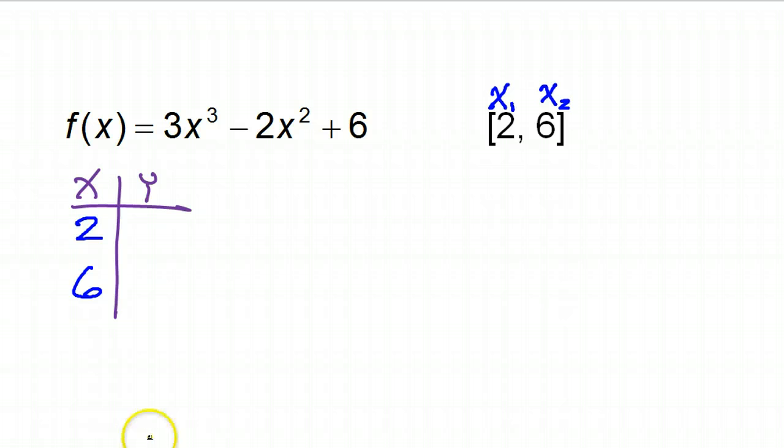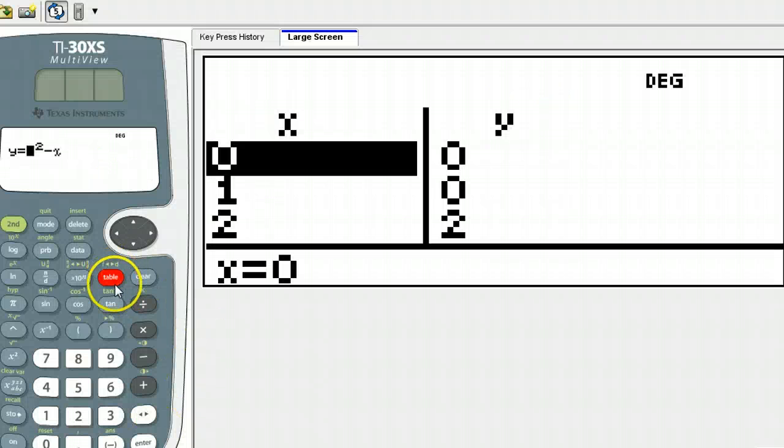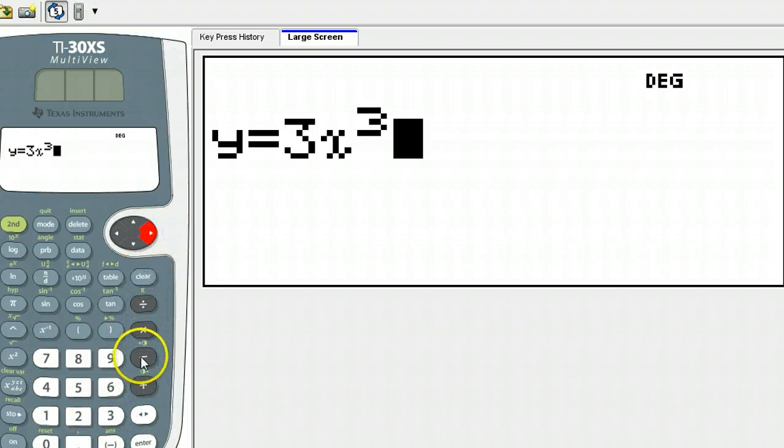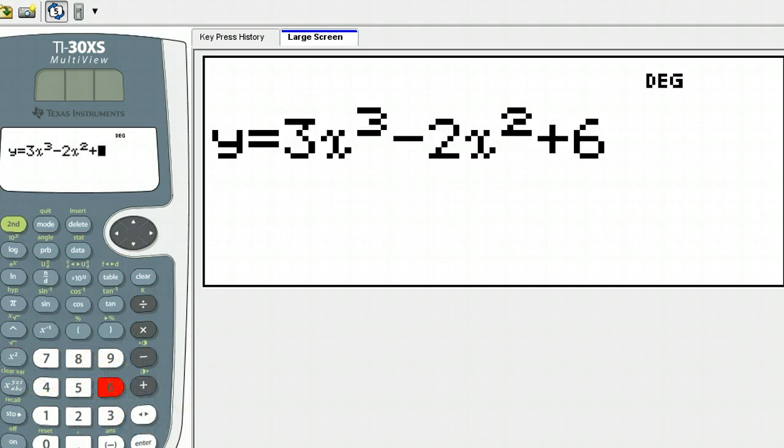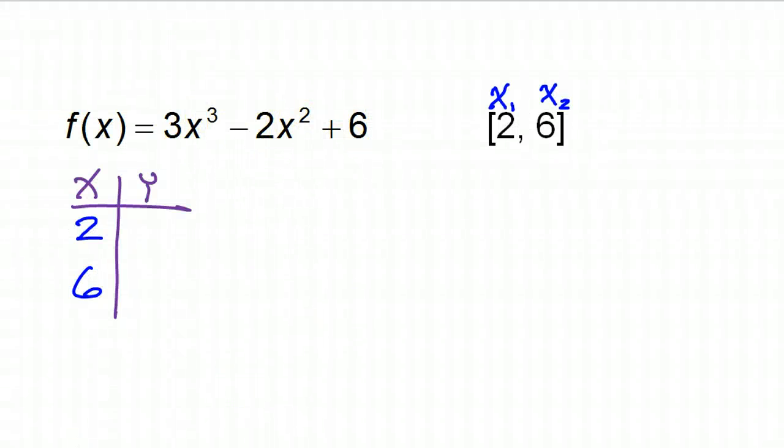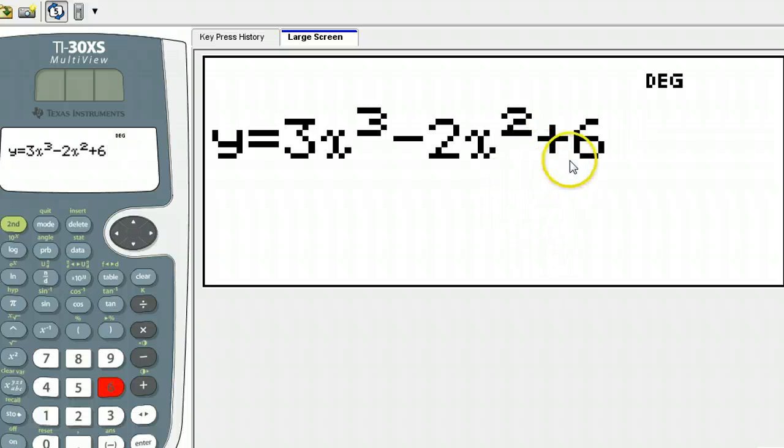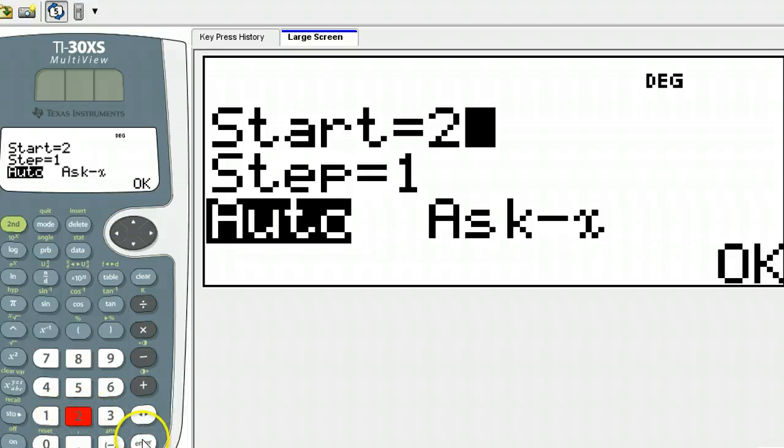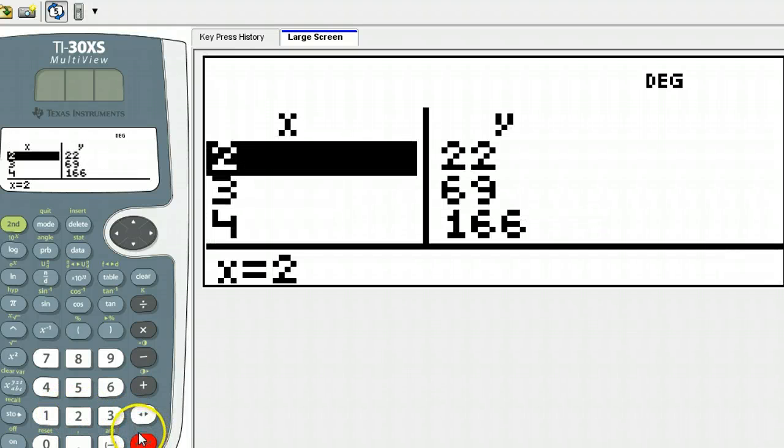And I'm definitely going to use the calculator. So hit your table button. Clear this out. So we had 3x. Use a little caret here to make the third power. 3x to the third power. And I think we had minus 2x squared plus 6. Double check. 3x to the third power minus 2x squared plus 6. Okay, so there's our function. Hit enter. We want it to start at 2 since that's the first value we need. So might as well type in 2. Hit enter like 4 times.